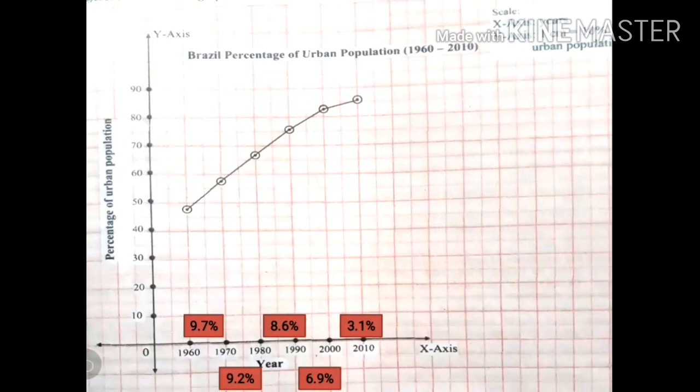Three questions are given on page number 49. Observing the graph, you will find that on the x-axis are the years 1960 to 2010, and on the y-axis is the percentage of urban population. The first question is: what is the interval of the data? The interval is 10 years, because from 1960 to 1970 is 10 years, from 1970 to 1980 is 10 years, and so on.